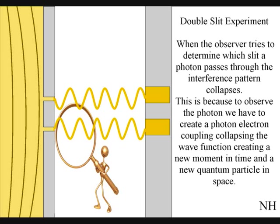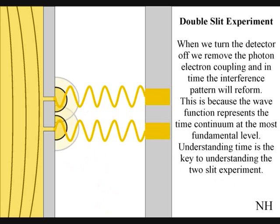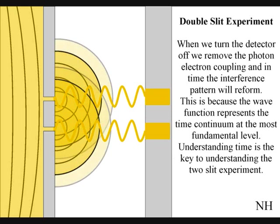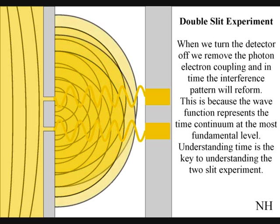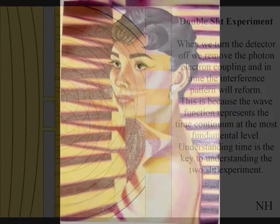This has nothing to do with consciousness. If we turn the detector off, we remove the photon-electron coupling, and in time, the interference pattern will reform. Just like in Newton's first law of motion, the interference pattern will continue to maintain its state, unless acted upon by an external force.